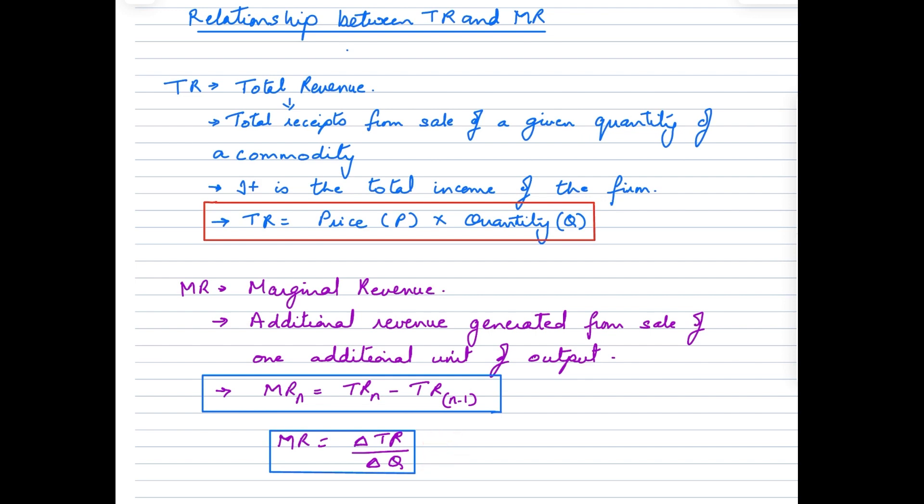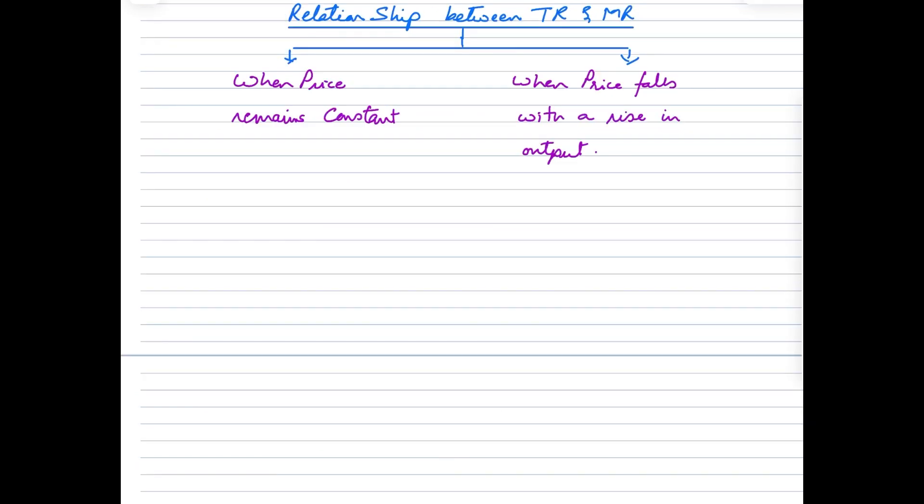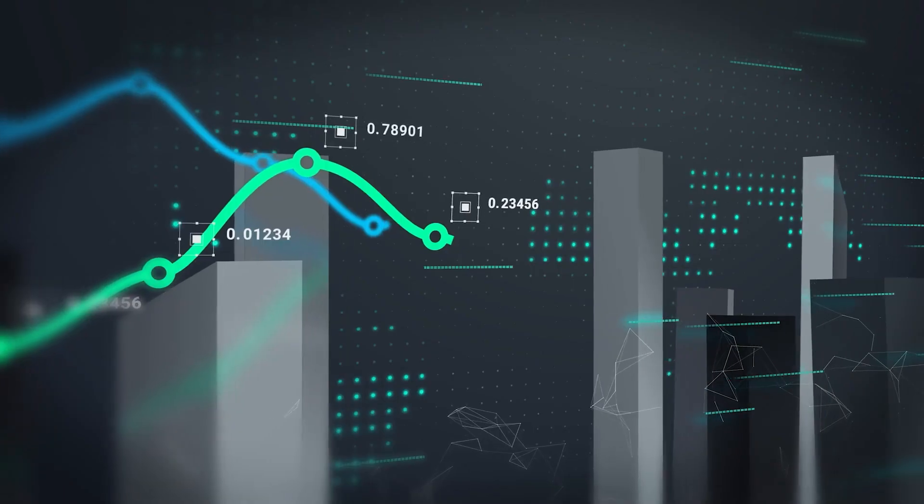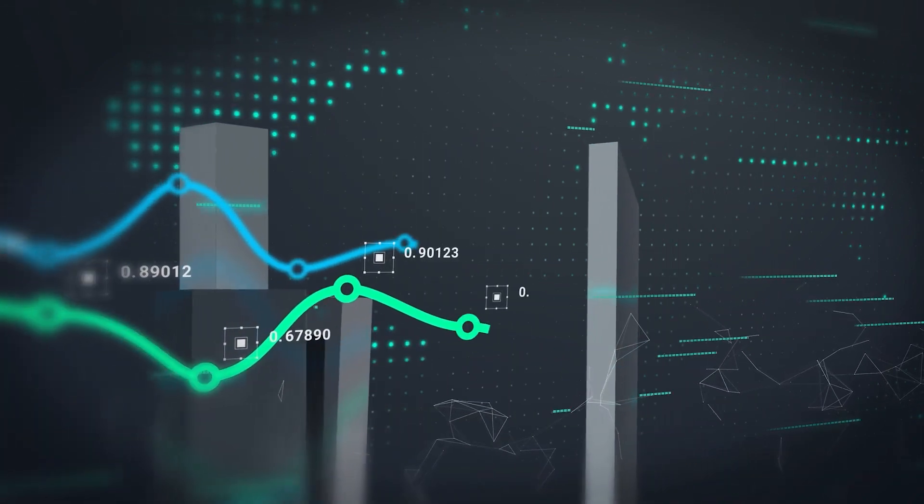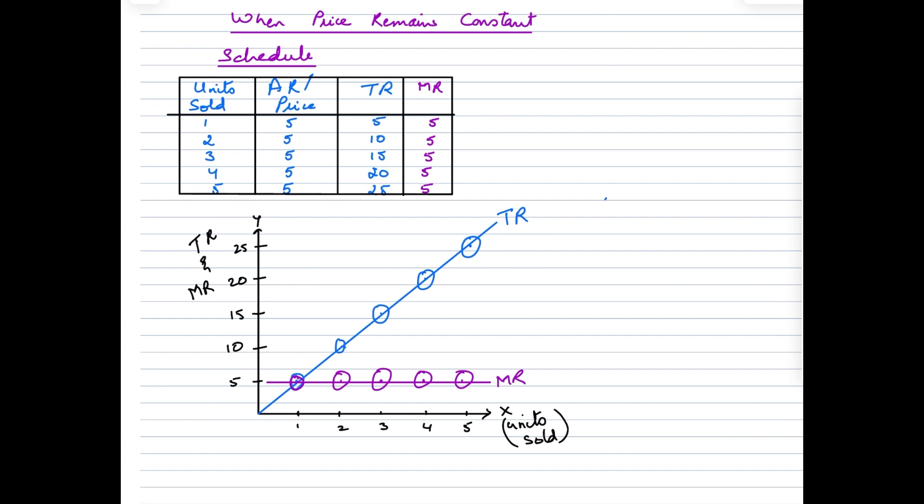When we talk about the relationship between TR and MR, there are two scenarios we have to look at. The first scenario is where the price remains constant, and the second scenario is where the price would fall with a rise in the output. Basically, these are different market structures where the first refers to perfectly competitive markets and the second to imperfect competitions. In this video we shall focus only on when the price remains constant.